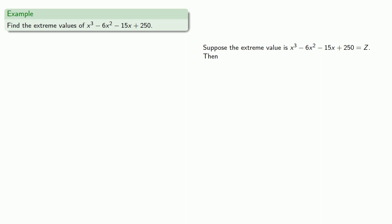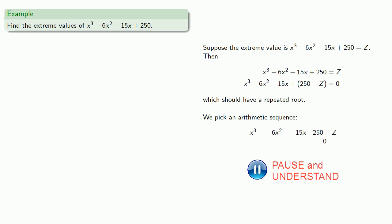So let's try to find the extreme values of this expression. Suppose the extreme value is x cubed minus 6x squared minus 15x plus 250 equals z. We can rearrange. And we want this equation to have a repeated root. Now, while we could pick any arithmetic sequence we want, since we don't know the value of z, we might as well make that last term 0. That way our Hudde polynomial will not incorporate this unknown value. So we take any arithmetic sequence that ends in 0. How about the simplest? 3, 2, 1, 0.